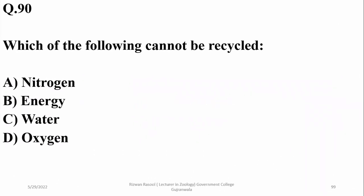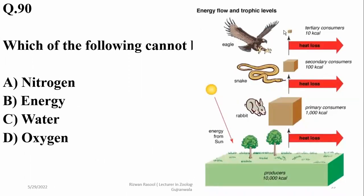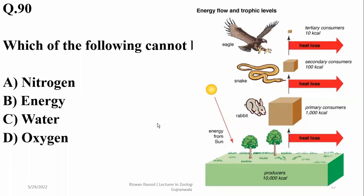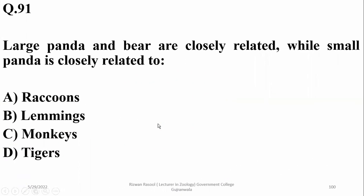Question 90: Which of the following cannot be recycled? Nitrogen cycle, water cycle, and oxygen cycle have been studied, but energy — in food chains and food webs — leaves the ecosystem in the form of heat loss.